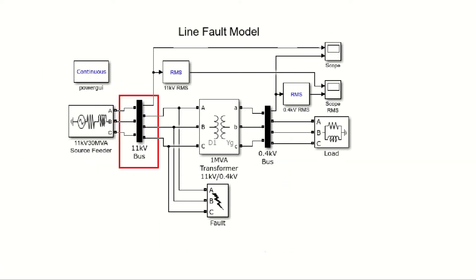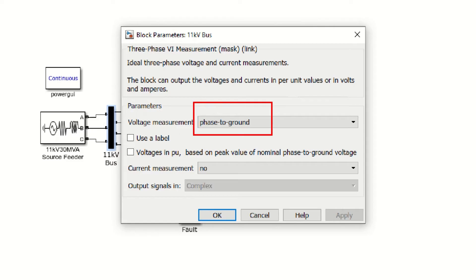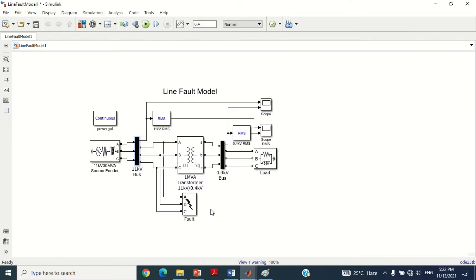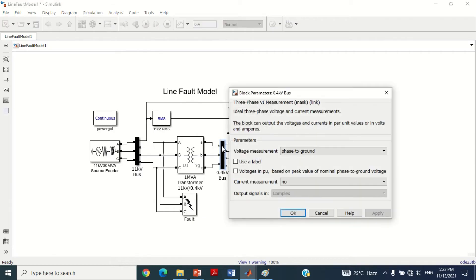Now come to the second block of the model which consists of a three-phase measurement block. It is assigned with the name 11 kV bus. Double-click on it to see its values. You can see here we are going to measure the phase voltage, therefore phase-to-ground is selected. It may be noted that the same three-phase measurement block is also used at the receiving end side with the assigned name of 0.4 kV bus, and this block also has the same settings.